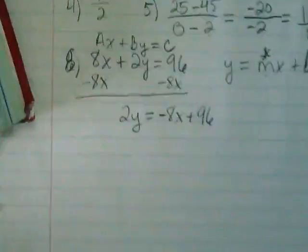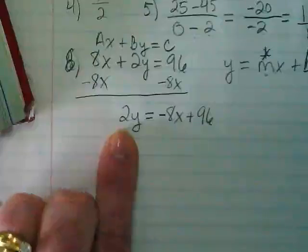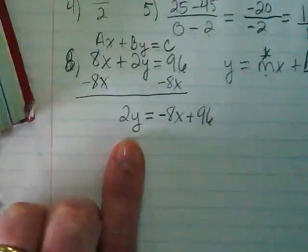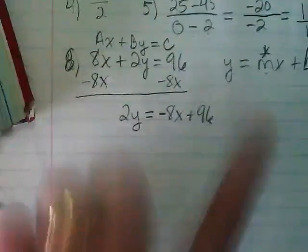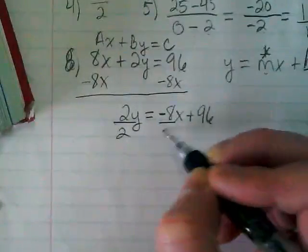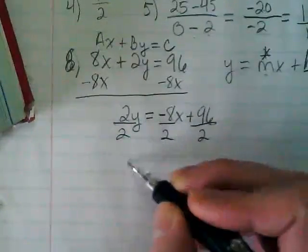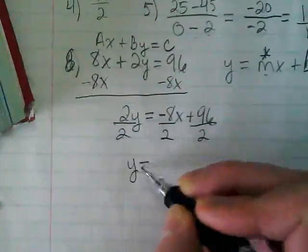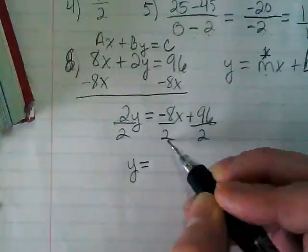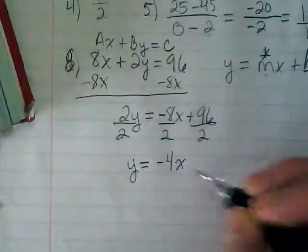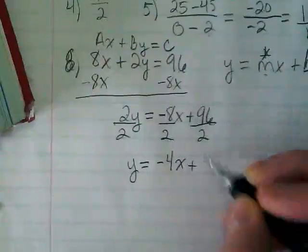Except it's not yet. Nothing's finished until the Y is by itself. And as soon as I divide out this 2, we're going to know what our slope is. You have to divide it from all of the pieces of the equation. 2 divided by 2 leaves us with invisible 1 and Y. Negative 8 divided by 2 leaves us with negative 4X plus 48.